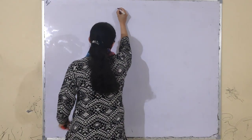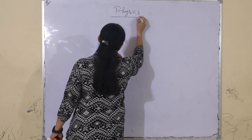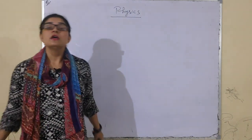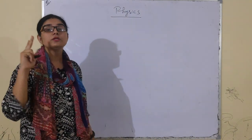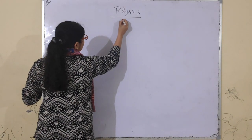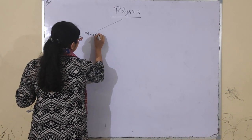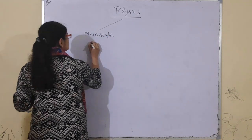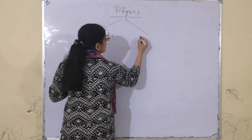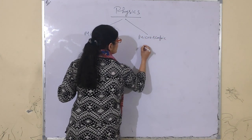Physics ke bhi kuch parts kar sakte hain. Physics basically two domains mein available hai: first domain is macroscopic domain, and the second one is microscopic domain.